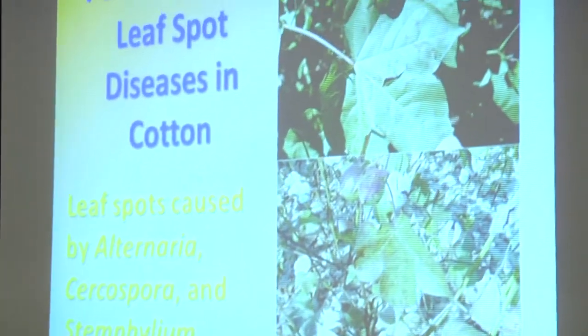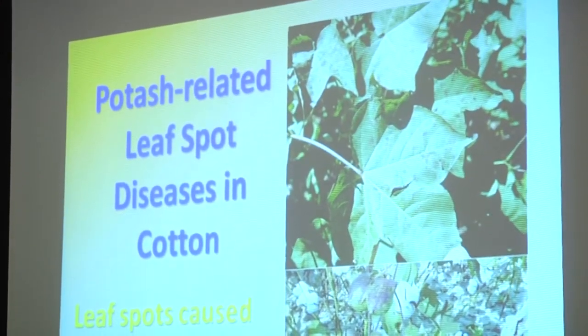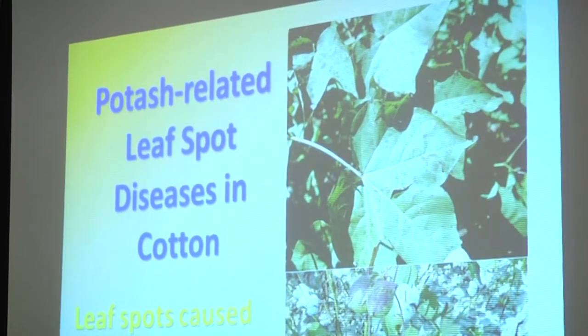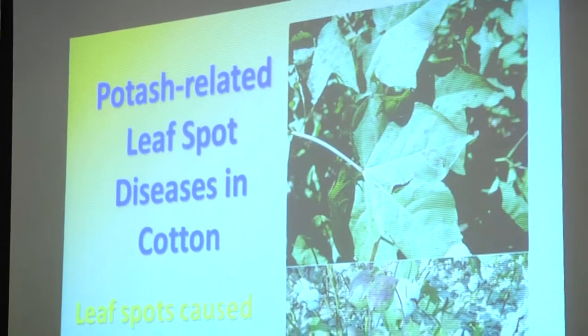As probably all of you are aware, there are some potash-related leaf spot diseases in cotton. If you're on sandy land where potash tends to leach, you can run into problems with these leaf spots. They're caused by the fungi Alternaria, Cercospora, and Stemphylium — Stemphylium is the one I see more often around here in central and south Alabama. You tend to get leaf spotting developing particularly in the top but also in the middle canopy. The spots usually have a purple margin and eventually get a tan center, typically no more than an eighth of an inch in diameter.